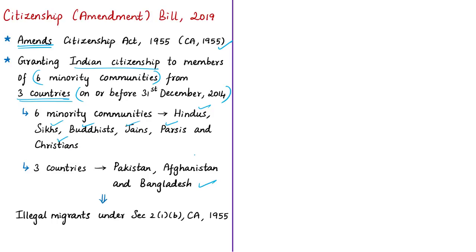Those members who migrated without valid travel documents, or whose travel documents' validity has expired, will be given Indian citizenship based on the proposed amendment. Currently, these individuals are termed as illegal migrants under Section 2(1)(B) of the Citizenship Act of 1955. This section is proposed to be amended by the bill to include these members.